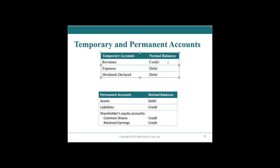For example, if we had revenues of $10, expenses of $6, and dividends declared of $1, our retained earnings would be 10 minus 6 minus 1, equal to $3. The net impact would be a credit to retained earnings of $3 — we would debit revenues for $10, credit expenses for $6, credit dividends for $1, and therefore credit retained earnings by $3 to close out our temporary accounts.